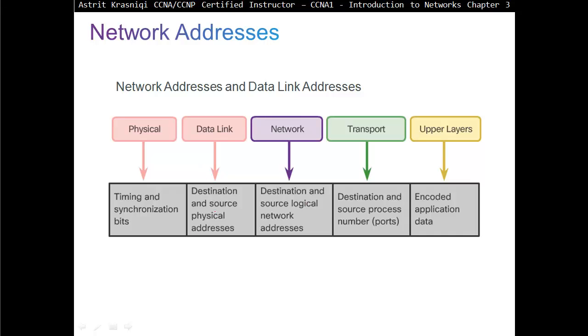Then we have data link layer. Data link layer adds source and destination IP or MAC address. These are called physical addresses because these addresses, you cannot change. You can spoof them, but you can't change it. And then the physical layer, it deals with timing and synchronization bits.